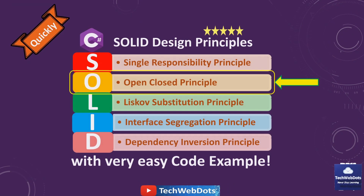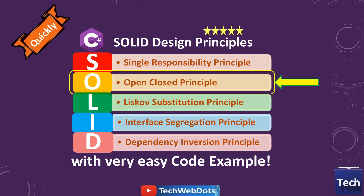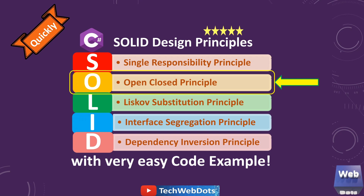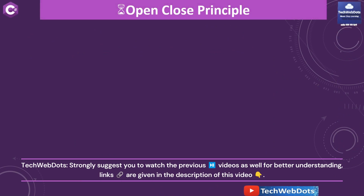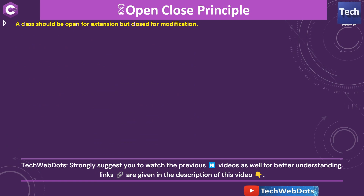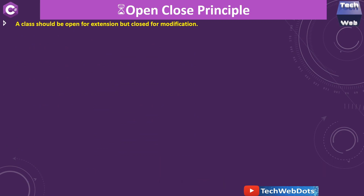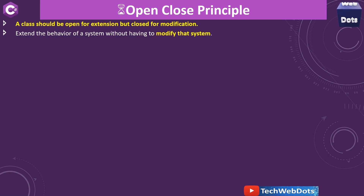I have already created one video where I consolidated all these principles and explained them in short, but in this session I will explain in detail. So for the Open-Close Principle, the golden rule says: a class should be open for extension but closed for modification.